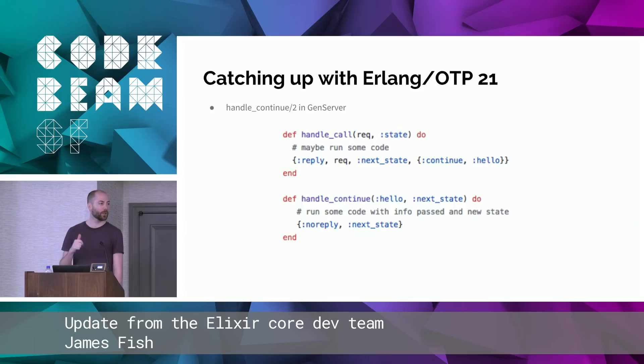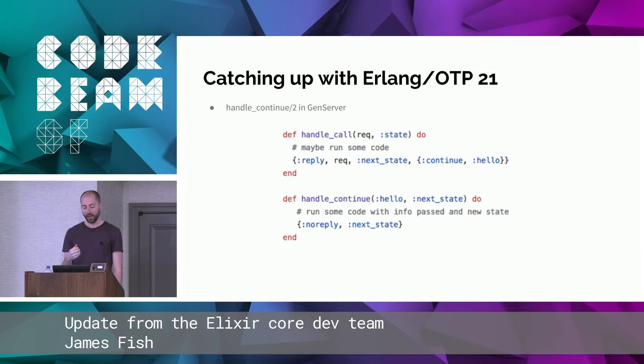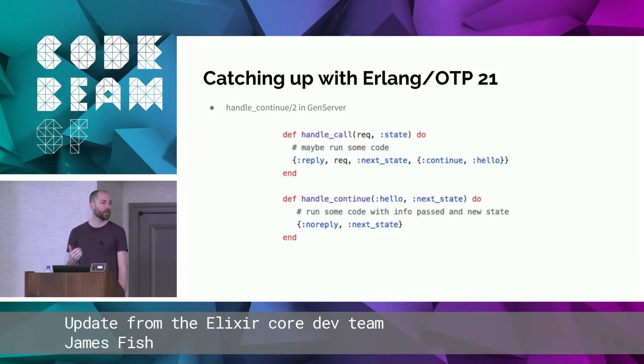Handle continue was actually contributed by Jose. There's a new optional callback for GenServer. It allows you to send a term to a callback without receiving a message. This callback, handle_continue, is called immediately. This allows you to move to a new state so that if an exception is raised, the error logs will include this new state. One use case is to prevent yourself from sending a message, since messages could arrive between your current callback and the next one.